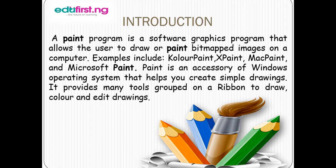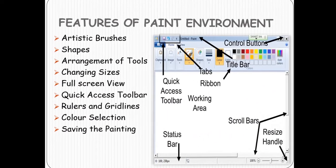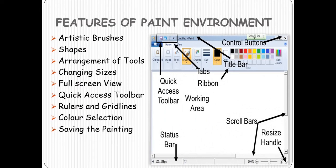Now let's look at the features of the paint environment. As we can see, this is the paint environment that we normally see when we open it. We have the artistic brushes, the shapes, the arrangement of tools, the changing sizes, the full screen, the quick access toolbar, the ruler, the grid lines, the color selection, and saving the painting. These are some of the features you can see in the paint environment.